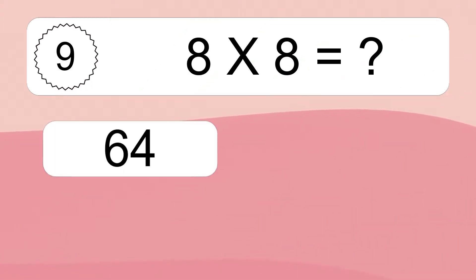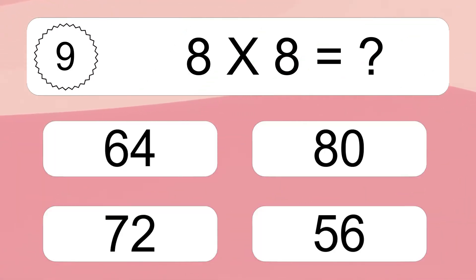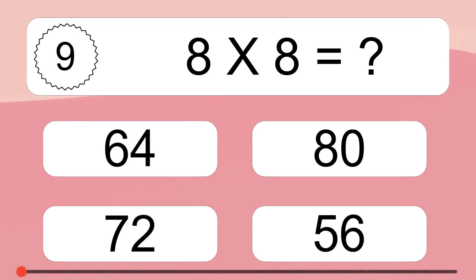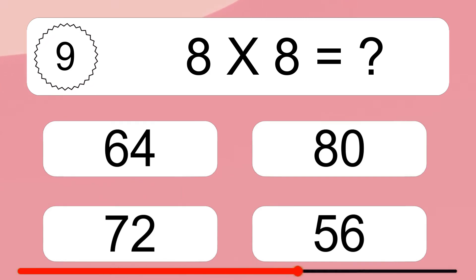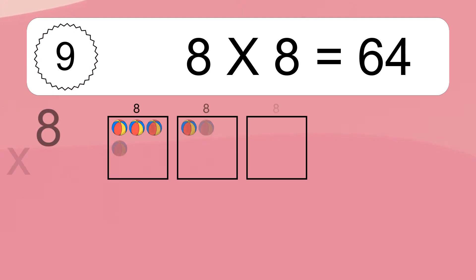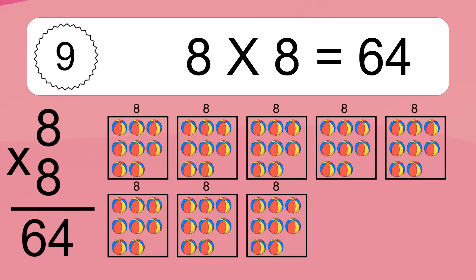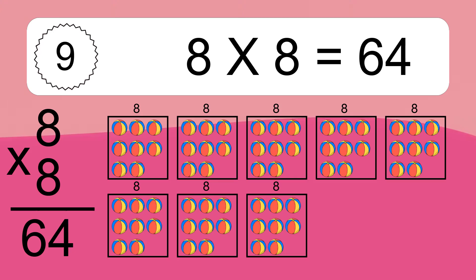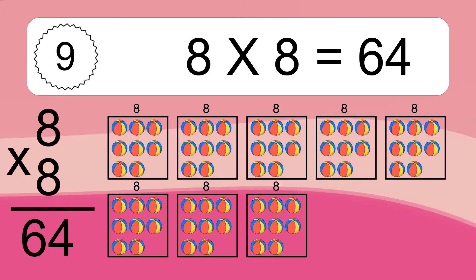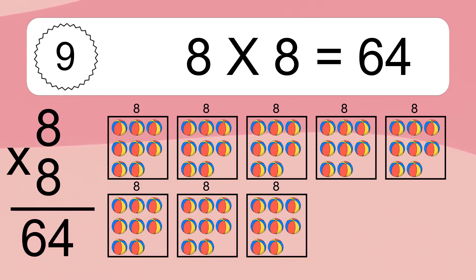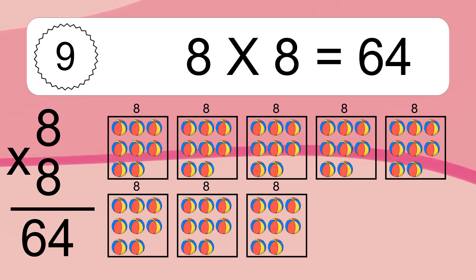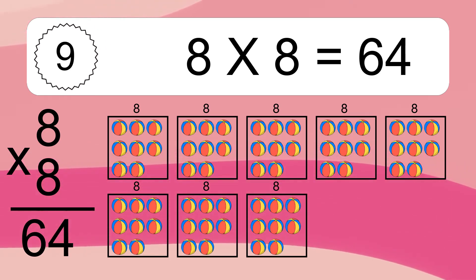8 times 8 equals what? 8 times 8 equals 64. We have 8 boxes and each box has 8 colorful balls inside. If you count all the balls in all the boxes together, you will have 8 times 8 balls. This equals 64 balls.